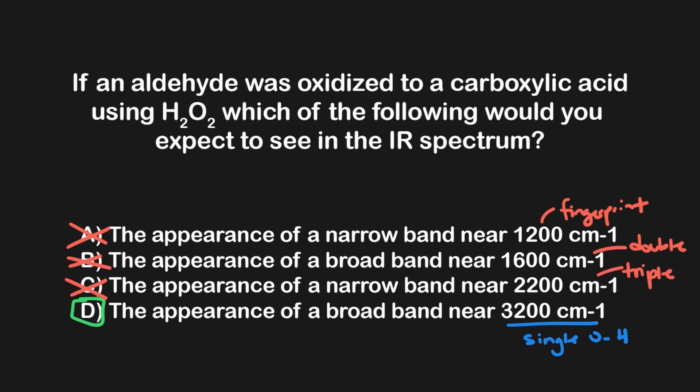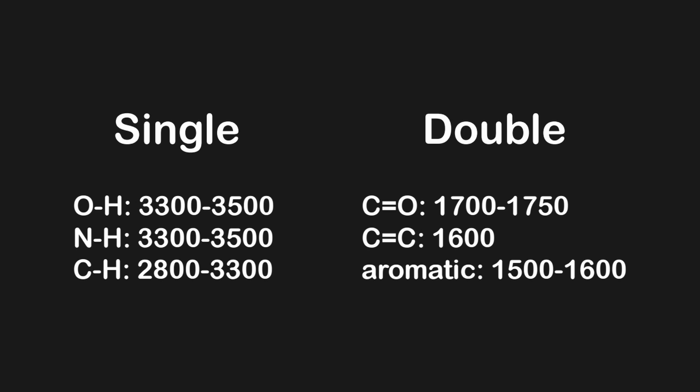What if the answer choices in this last question had two answers corresponding to the single bond region, though? How could we end up picking between them? Not all stretches are equal, even if they are both double bonds or single bonds. For example, the C double bonded to an O shows up right around 1700 to 1750, while aromatic carbon bonds tend to show up around 1625 to 1475.